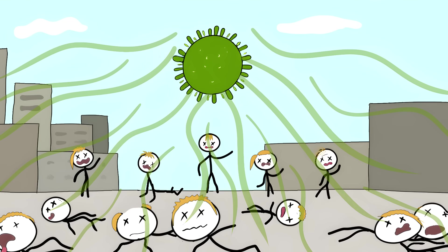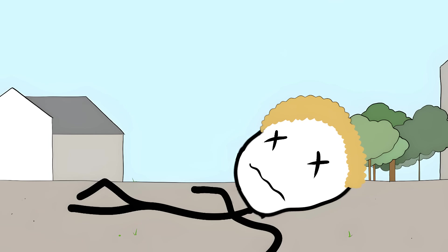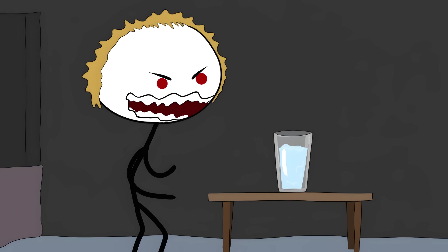Number 5. Airborne Rabies. Regular rabies is already one of the deadliest viruses on Earth. Once symptoms show up, you're dead. No exceptions. The virus hijacks your brain, making you aggressive, confused, and terrified of water.